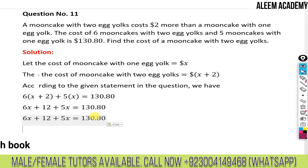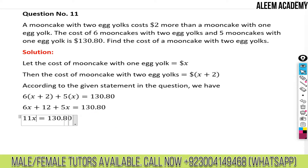Everything is in dollars, so we do not need to write the dollar sign. If there were a difference — like some values in cents and some in dollars — we would need to convert them first, but here everything is in dollars. Combining like terms: 6x plus 5x becomes 11x, giving us 11x + 12 = 130.80.